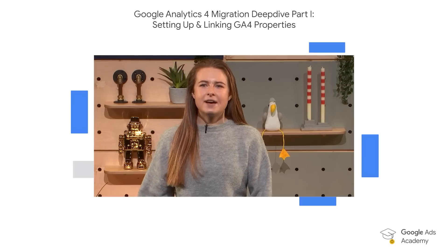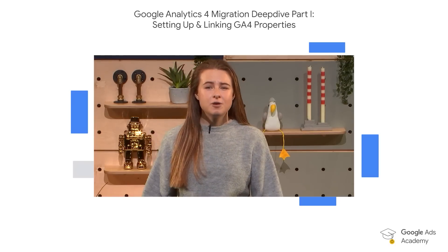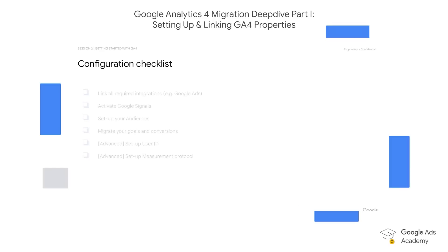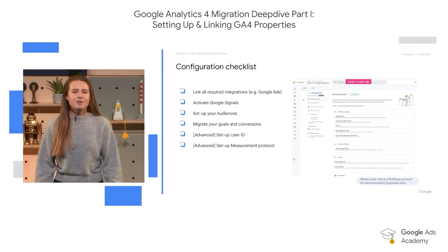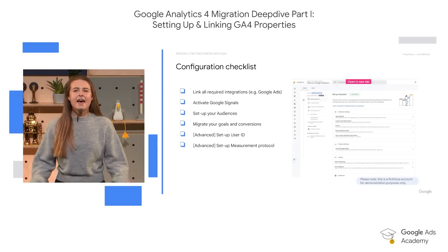The Setup Assistant identifies a number of configuration settings to implement in your GA4 property. We recommend you firstly link all required integrations, for example Google Ads. Secondly, activate Google Signals. Next is setting up audiences and migrating your goals and conversions, which we'll dive into in future sessions. Then, as a more advanced optional step, setting up user IDs as well as measurement protocols.